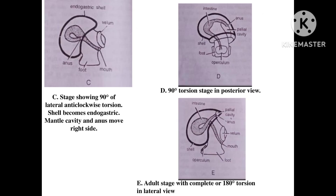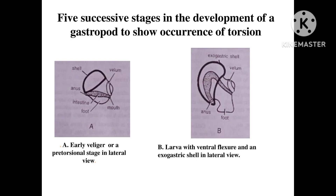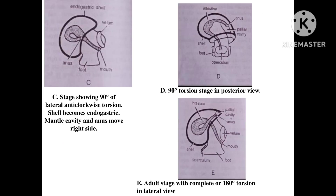Stage C displays 90 degrees of lateral anti-clockwise torsion. We said a total of 180 degrees of anti-clockwise rotation will take place, so image C shows the first 90 degrees. You can see how the intestine is getting rotated compared to images A and B. In this stage, the shell becomes endogastric, and the mantle cavity and anus move to the right side.